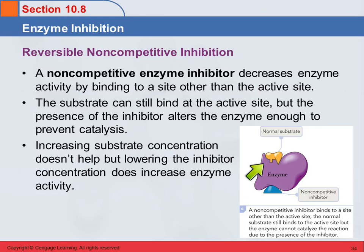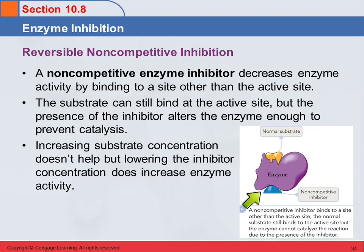When you've got a situation like that, increasing the concentration of substrate is not going to increase the rate of the reaction — it's not going to have any effect. Because the problem is not that the substrate can't get in; the problem is that you've got this non-competitive inhibitor somewhere else on the enzyme causing problems. Really the only thing you can do is lower the concentration of the inhibitor molecule, or increase the enzyme concentration — if the inhibitor concentration stays the same, that would help the situation as well.